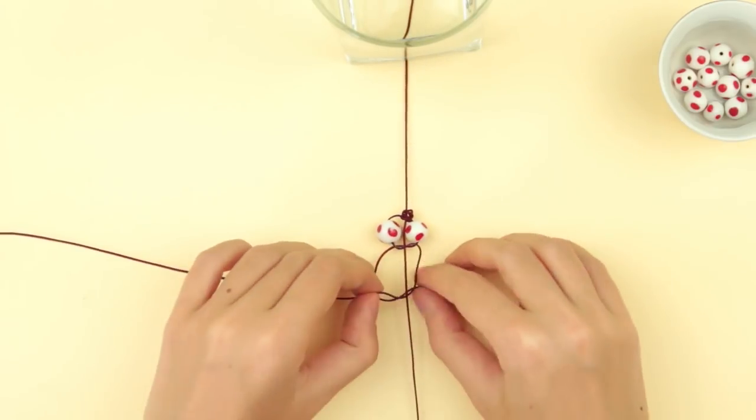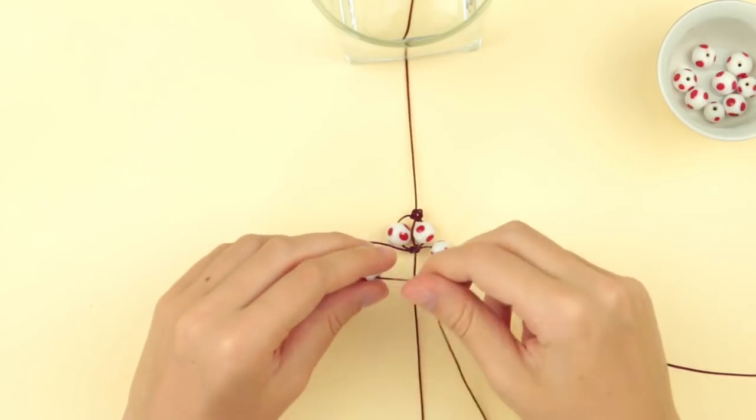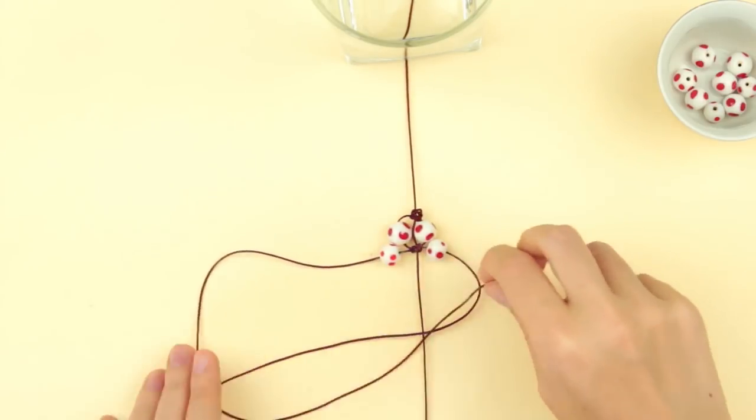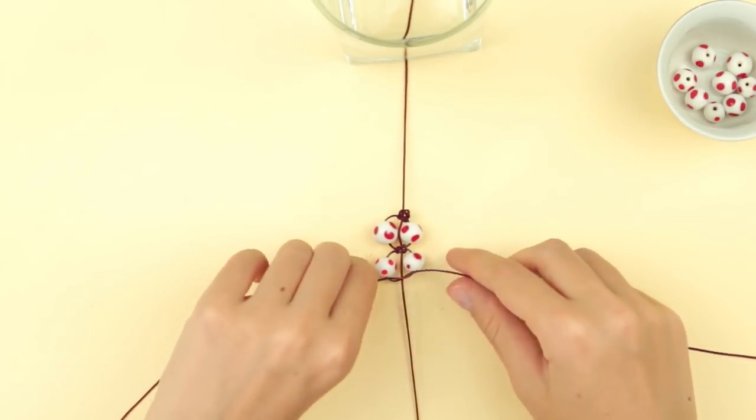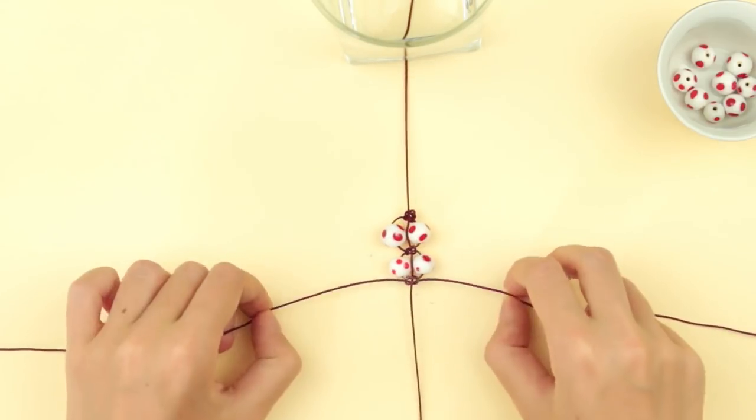Just 2 knots. Again, string the beads. Repeat all the steps. Keep braiding. We want 2 rows.